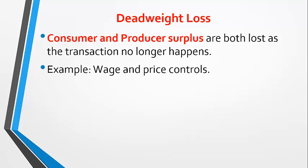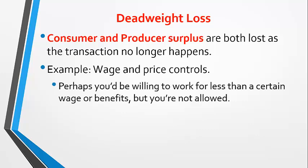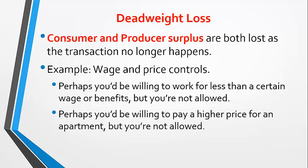This occurs frequently as the government intervenes in the economy. Sometimes the government sets minimums for wages and benefits, or maximums for price. Perhaps you'd be willing to work less than the mandated wage, or without some required benefits, and an employer would gladly hire you, but it's not allowed by law. Perhaps you'd be willing to pay a higher price for an apartment in a rent control district, but that would also be illegal. Those are examples of lost surplus and deadweight loss.